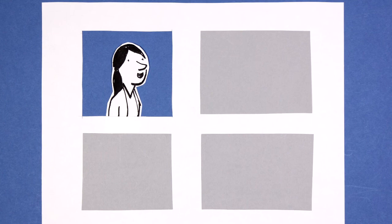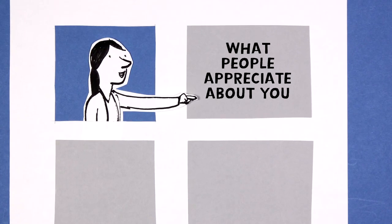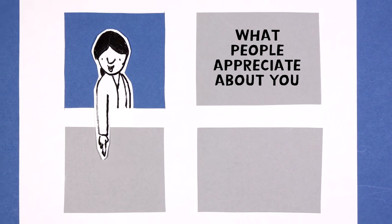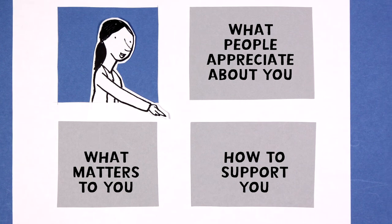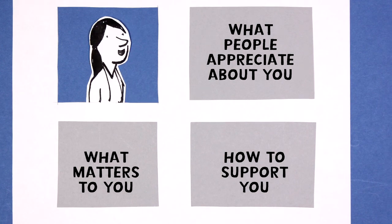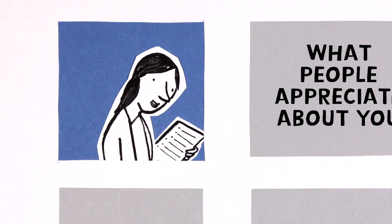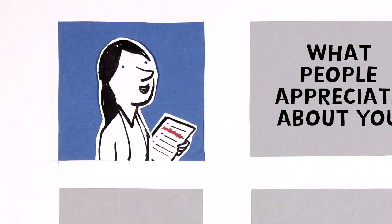A one-page profile has three sections: what people appreciate about you, what matters to you, and how to support you in relation to your health and care. But you only need to share things that you're comfortable other people knowing.